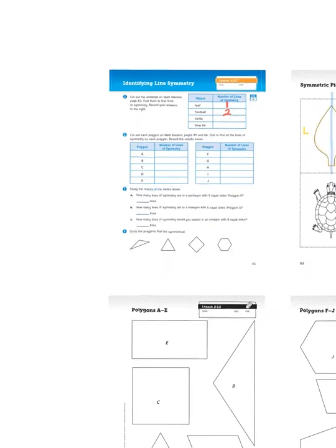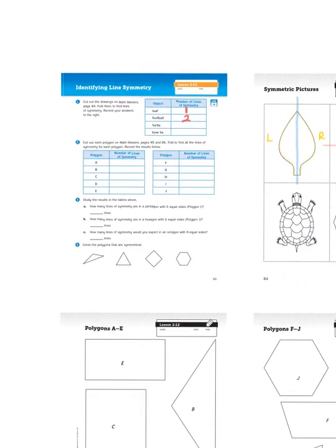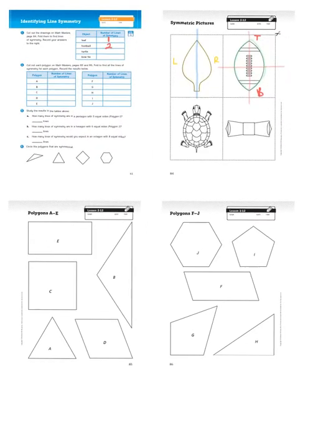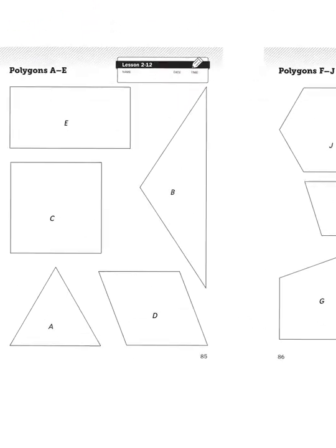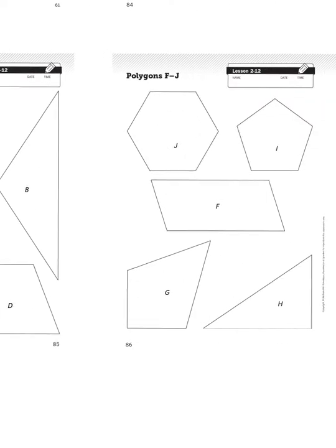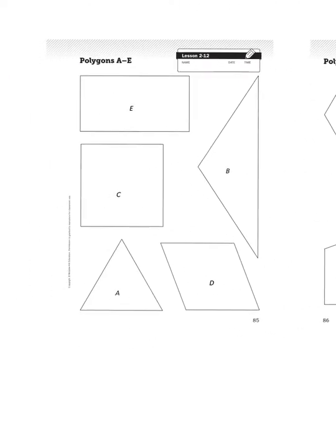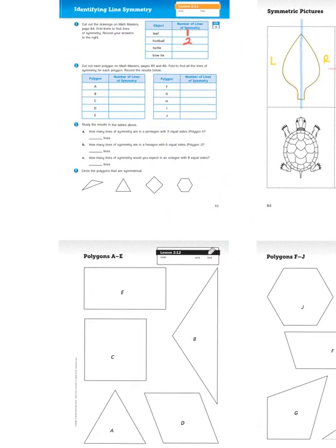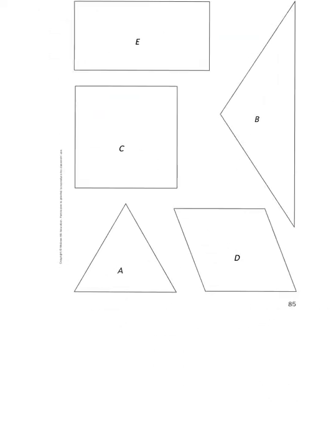All right, so now, let's take a look at the polygons, which are Math Masters pages 85 and 86. We have a series of two-dimensional shapes, A through E, and then F through J. And again, the same question occurs. How many lines of symmetry can we get out of each shape? So, for example, shape number A.